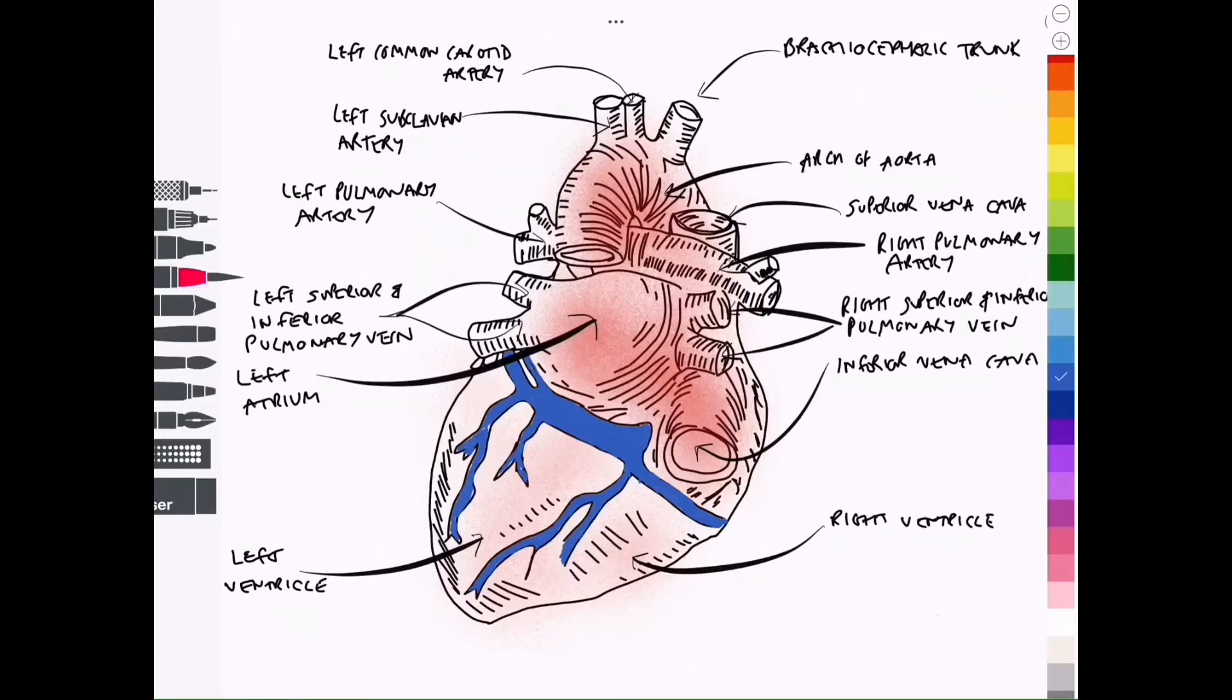So that is the main anatomy that we can see. Let's now move on and talk more specifically about those veins and the venous drainage. So let's kick things off by talking about the coronary sinus.